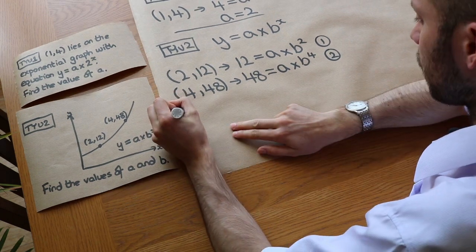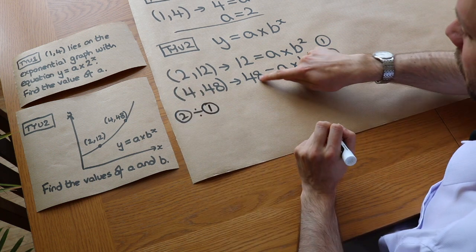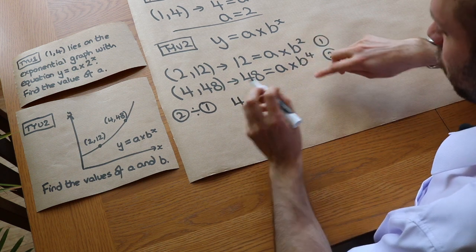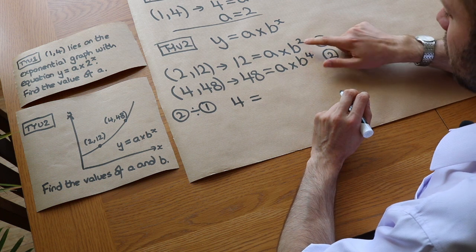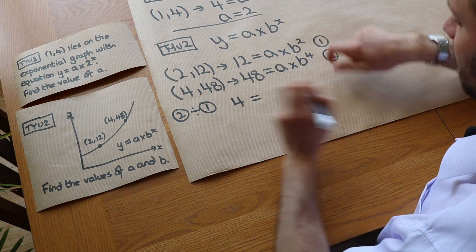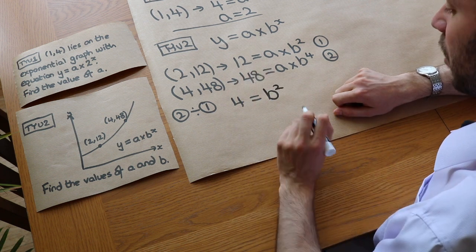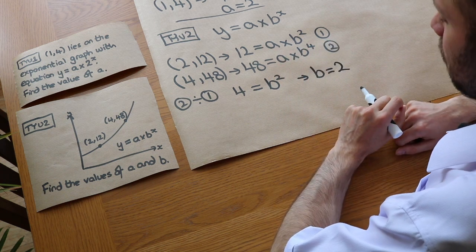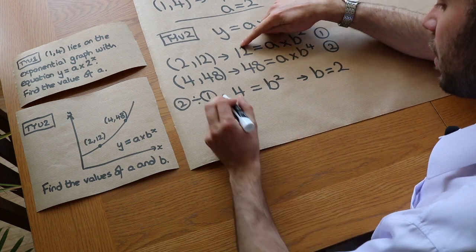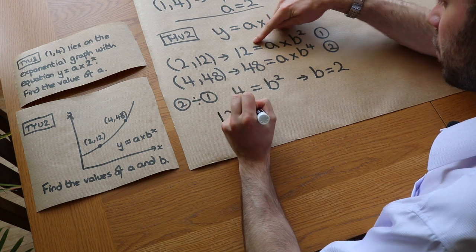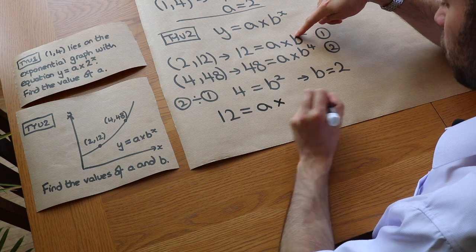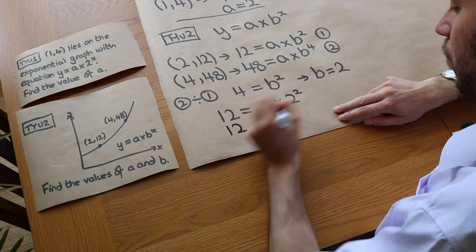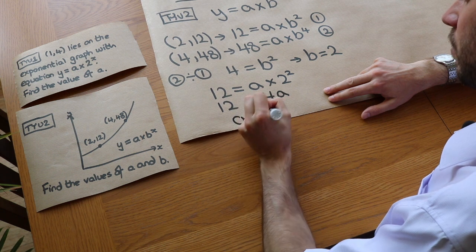48 divided by 12 gives 4. The a's cancel, and B to the 4 divided by B squared gives B to the power of 4 minus 2, which is B squared. So 4 equals B squared, and since B is positive, B equals 2. Substituting back into equation 1: 12 equals A times 2 squared, which is 12 equals 4A, so A equals 3.